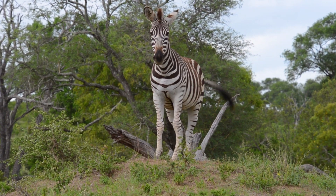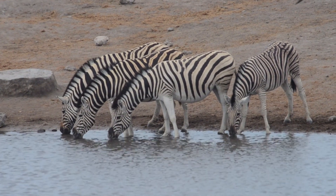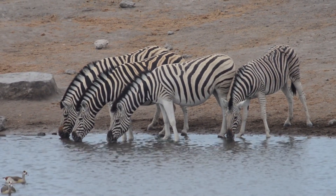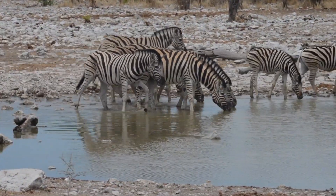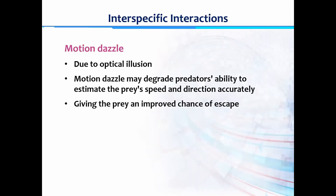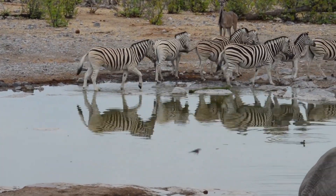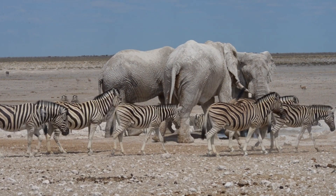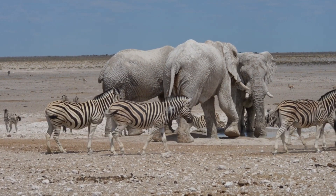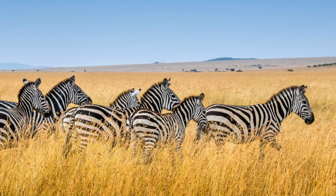Motion dazzle can create an optical illusion, and due to this optical illusion, it degrades a predator's ability to accurately estimate the prey's speed and direction. This gives the prey considerable time to improve its chances of escape. To understand motion dazzle better, we watch this video clip. Here you can see several zebras, and if you closely look at the moving animals, it is hard to identify their outer boundaries — one animal mixes with the next, making it hard to identify the direction of movement.